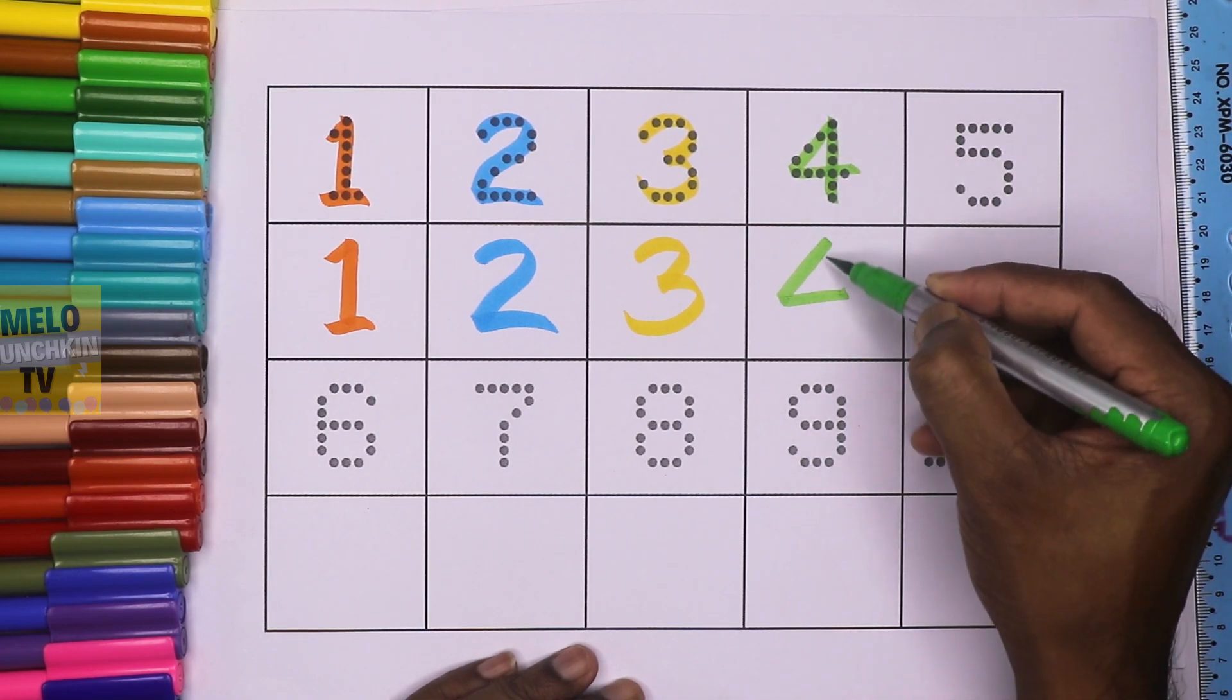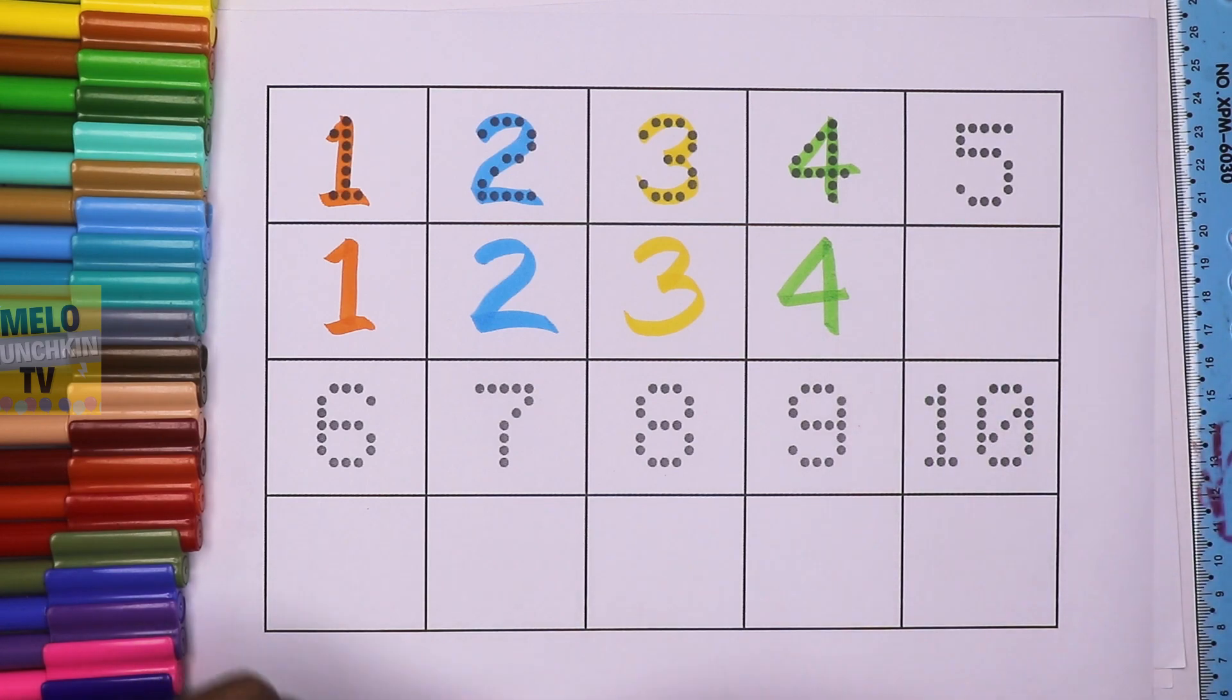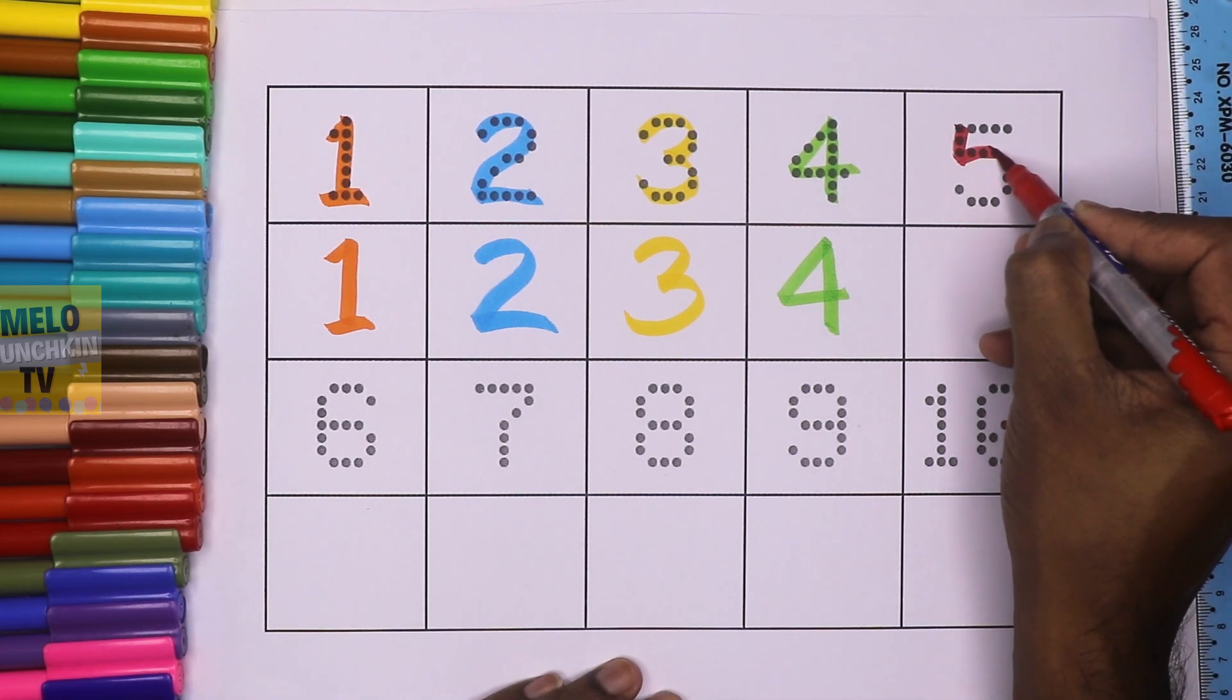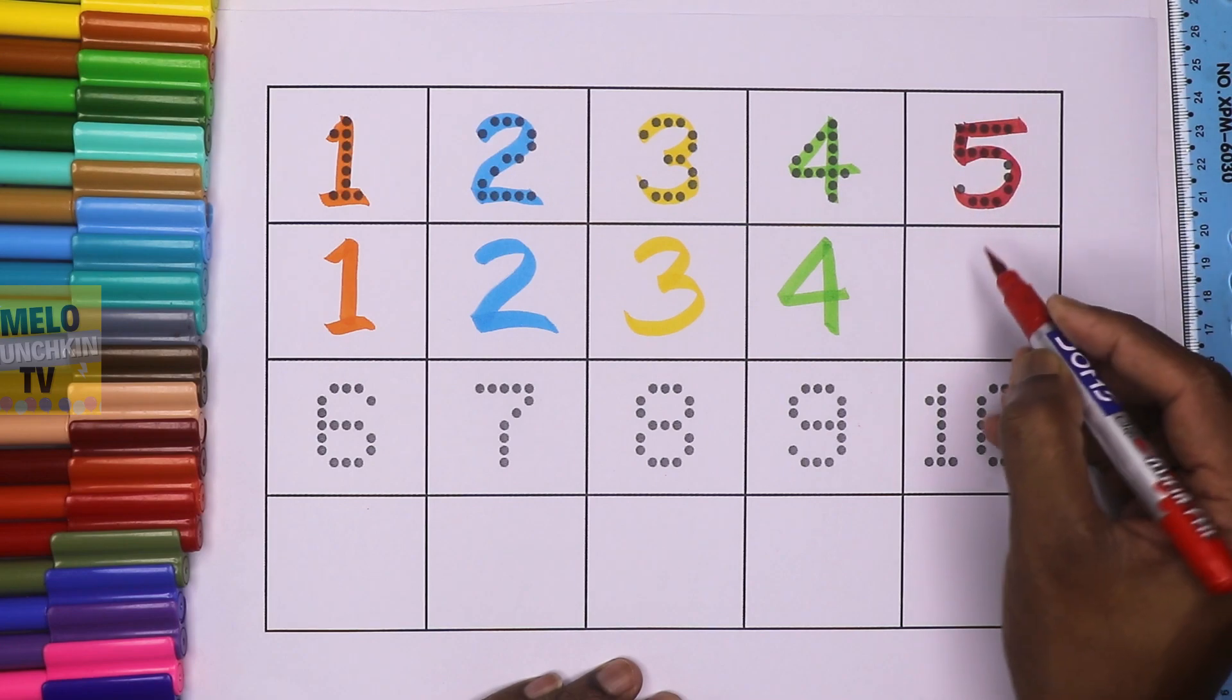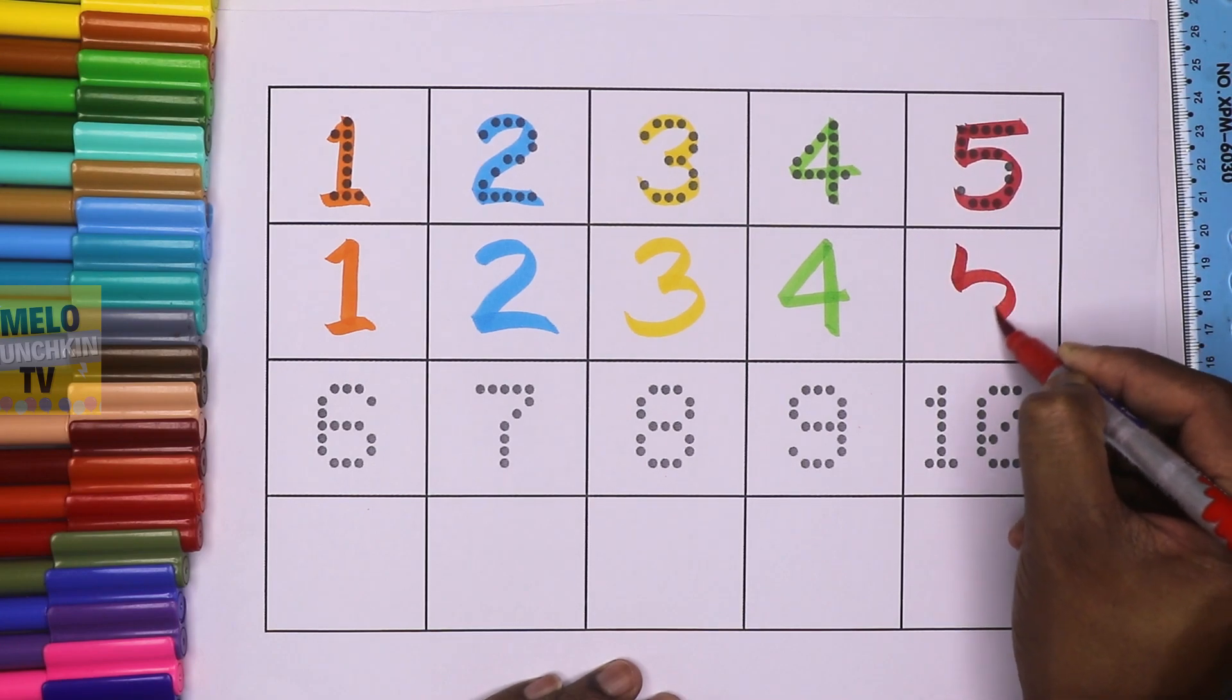This is number four. F-O-U-R, four. F-O-U-R, four. This is number five. F-I-V-E, five. F-I-V-E, five.